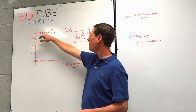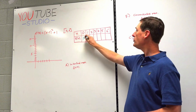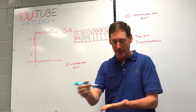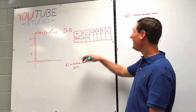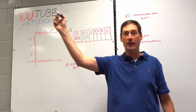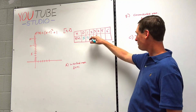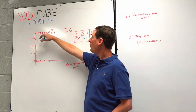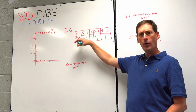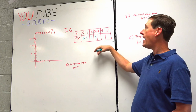If you plug in 1: 1 minus 2 is negative 1, negative 1 squared is positive 1, plus 1 is 2. Try to get the answer before I do. 2 minus 2 is 0, squared is 0, plus 1 is 1. Hopefully I'm saying it slowly enough. 3 minus 2 is 1, 1 squared is 1, plus 1 is 2. The y-coordinates were 5 down to 2, down to 1, and now it's coming back up again to 2 — because parabolas drop and then rise when they're concave up.